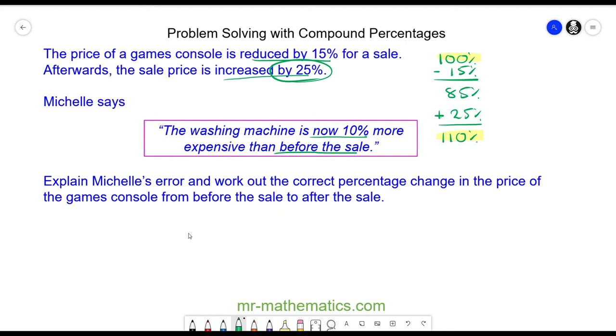However, what she should have done is you have your 100% and you do take your 15% away because it is a reduction. So you get 85%. But now this is your original amount when you make any more percentage changes. So when you increase 85%, which is the sale price, by 25%, you're working out 125% of the sale price. So it is a multiplication, not an addition.